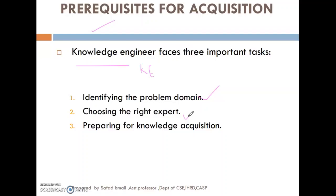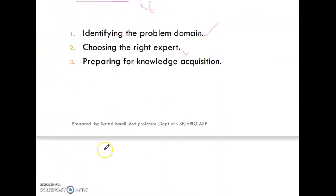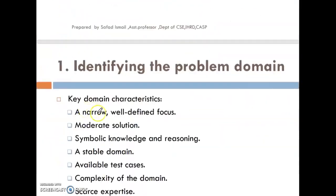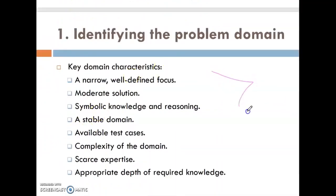We will gain good information and knowledge in the field of expert knowledge. We will find a solution to that. Now we will find three important tasks. If you are a knowledge engineer, then you will have a domain. We will find the characteristics of a domain. If you are interested in a particular domain, if you have a solution or a particular problem, you will find a problem.